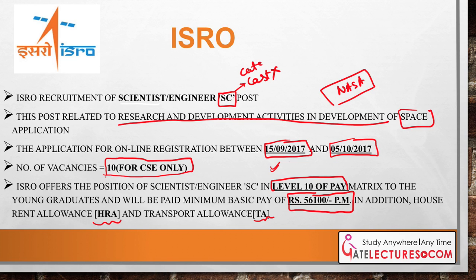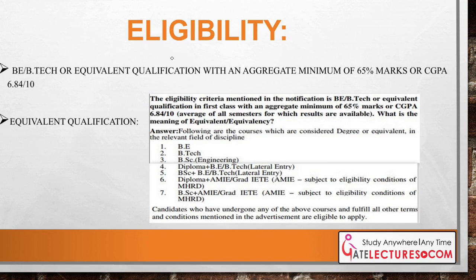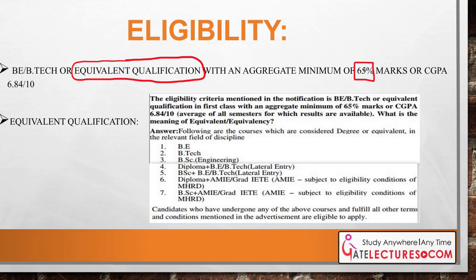The eligibility criteria for this vacancy is that you should have done B.Tech or an equivalent qualification. With at least 65% marks, or a CGPA of 6.84 or more. The equivalent qualification criteria means there are other degrees considered equivalent to B.Tech — these include BE (Bachelor of Engineering), B.Tech, B.Sc in Engineering, or Diploma plus B.Tech lateral entry, where students who completed a diploma and then took admission in B.Tech second year are also eligible.